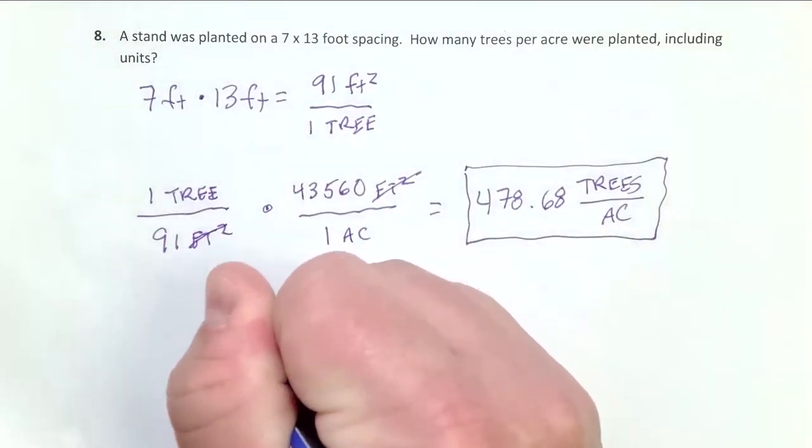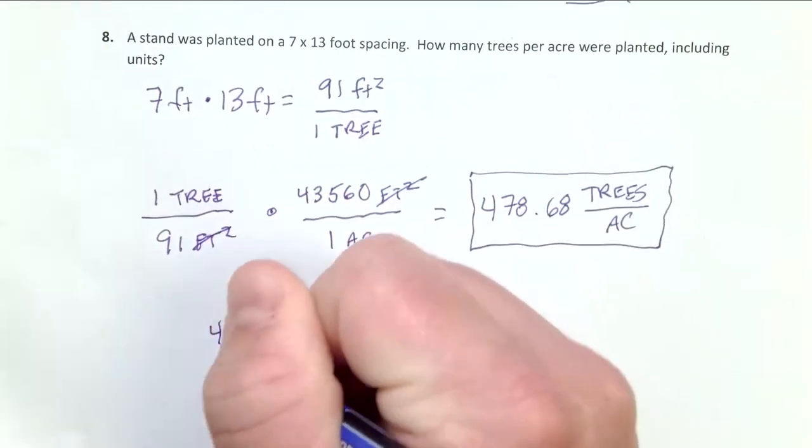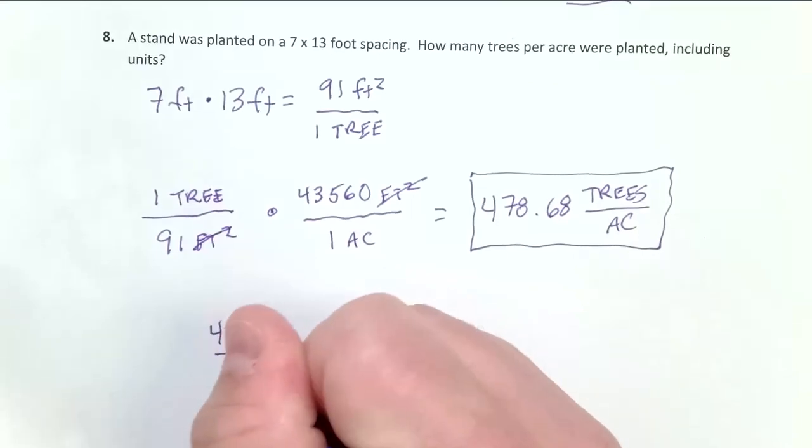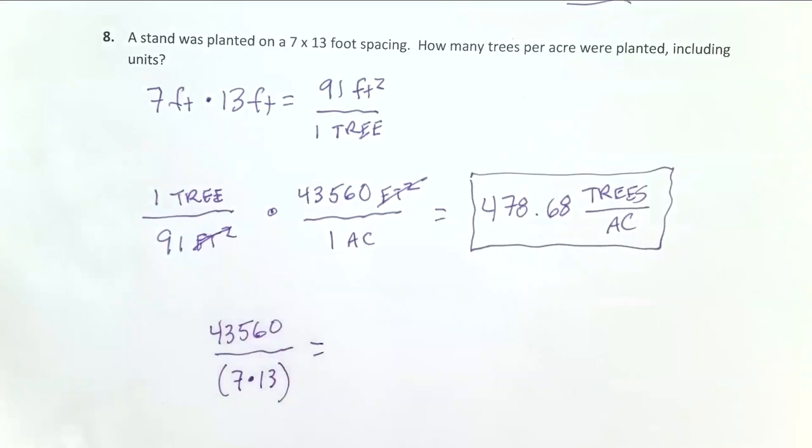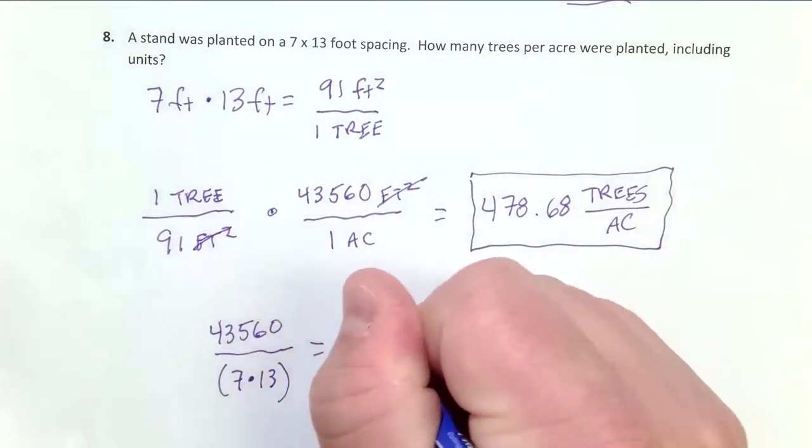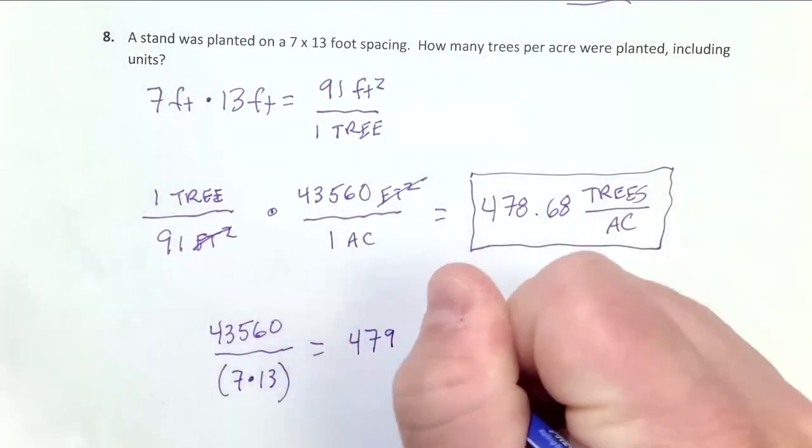I'll just take 43,560 and divide it by the product of 7 times 13, whatever our spacing is. Order of operations here: you multiply 7 by 13 first, and then you do the division. And I'm going to round it also. I'm going to say 479 trees per acre.